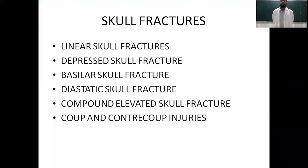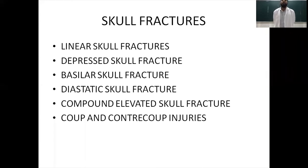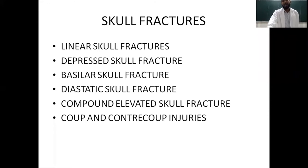What are skull fractures? The cranium is made up of eight bones: the ethmoid, sphenoid, frontal, occipital, two parietal, and two temporal bones. Skull fractures are classified as linear, depressed, basilar — most common in children — diastatic — again in children — compound elevated skull fractures, and the concept of coup and contrecoup injuries.